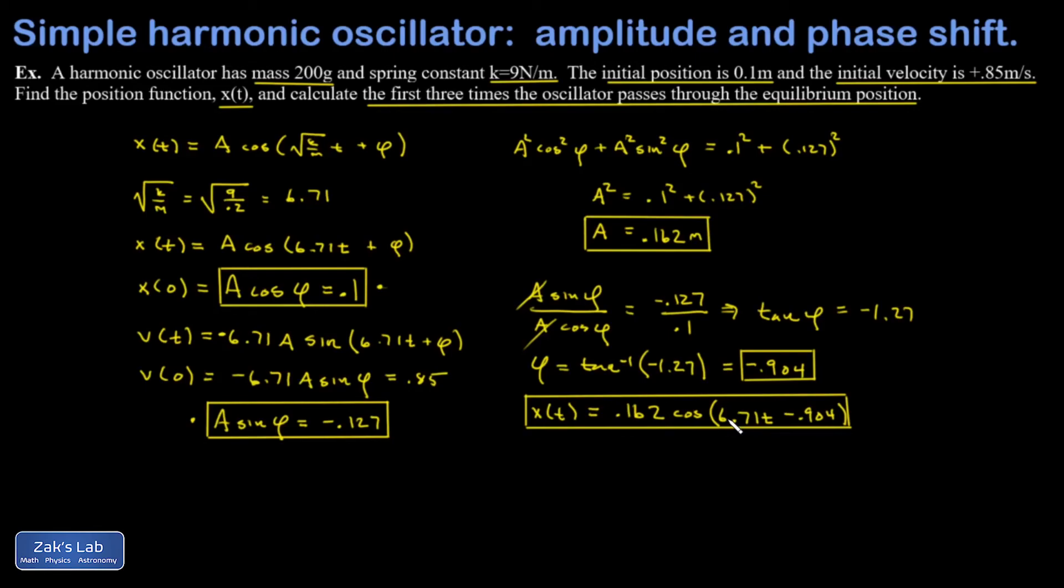So the cosine function is going to equal zero for the first time when its argument equals π/2. Then the next time when its argument is 3π/2. And finally, when its argument is 5π/2. So that's how we get a handle on this.